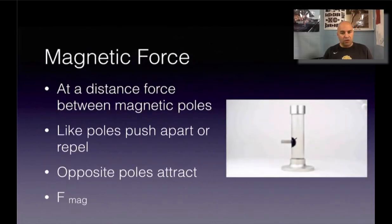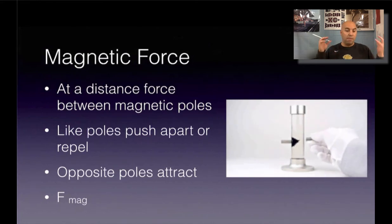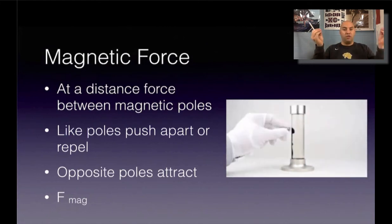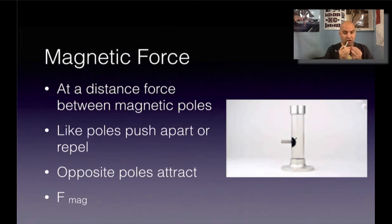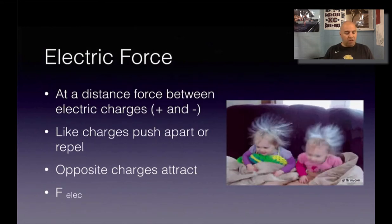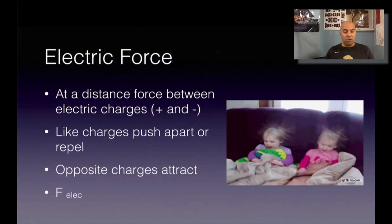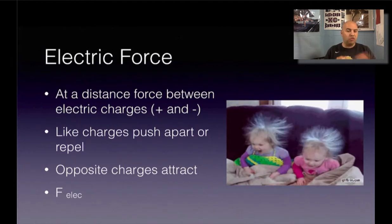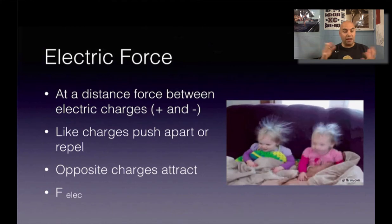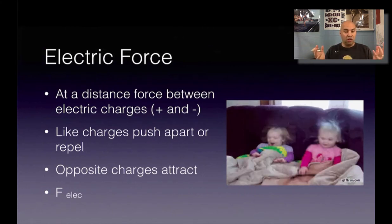Another at-a-distance force is the magnetic force — a push or a pull when two magnetic poles are interacting with each other. If you have two north poles or two south poles, they are going to push apart. If you have opposite poles, they attract each other. The symbol we use for that is F sub mag. Then you've got the electrical force — pushes and pulls happening between objects that have an electrical charge. They behave similarly to magnets: like charges push apart while opposite charges attract.